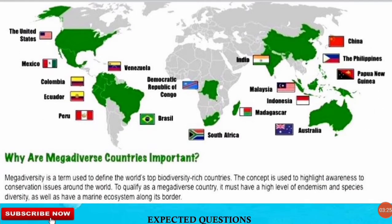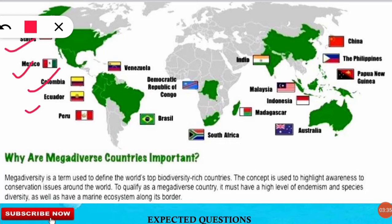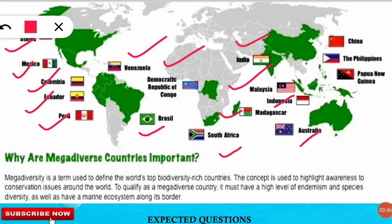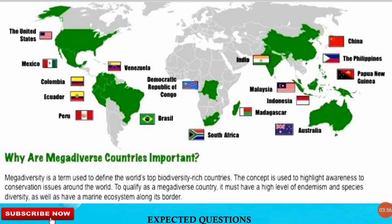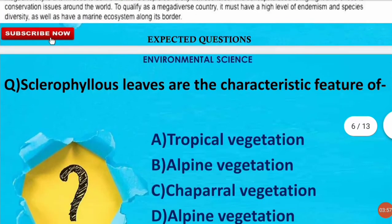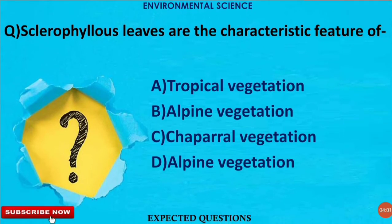These nations are the world's top biodiversity-rich countries. The 17 mega-diverse countries are: United States, Mexico, Colombia, Ecuador, Peru, Venezuela, Democratic Republic of Congo, Brazil, South Africa, Madagascar, India, Malaysia, Indonesia, Australia, China, Philippines, and Papua New Guinea. You can pause the video to note all the names, as they are important for the examination.